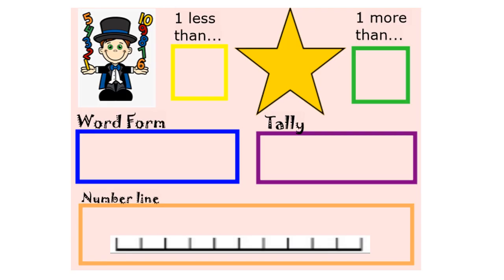Then we come to our magic number. Every day you can pick a different number—the child can pick, you can pick, you can find a random number generator on the internet or roll some dice. Any number that they know and they're confident with from zero all the way up to 20, and then you write that number in the star.